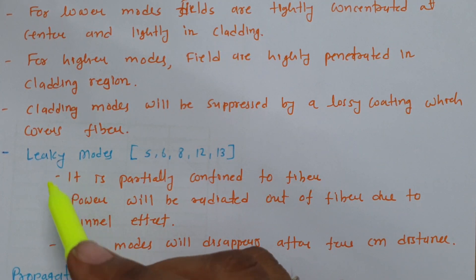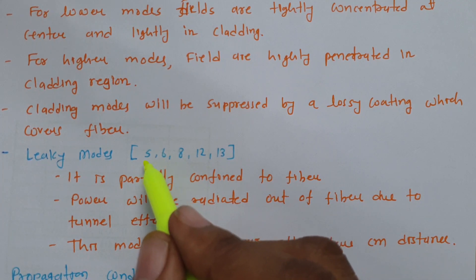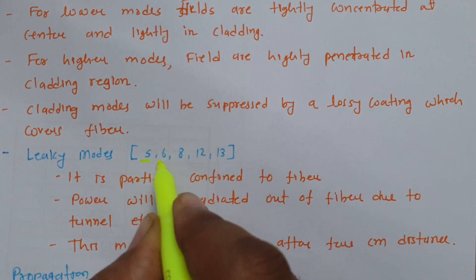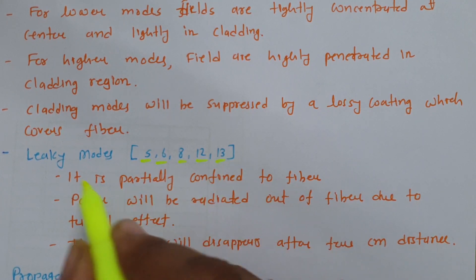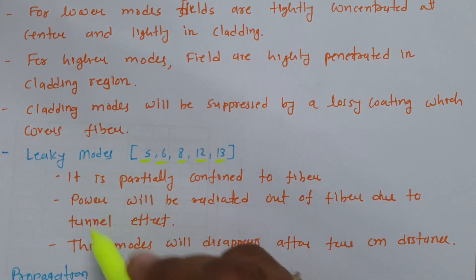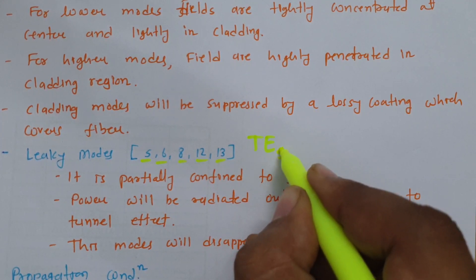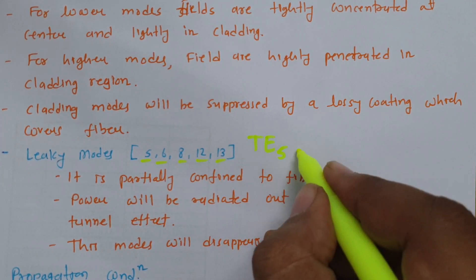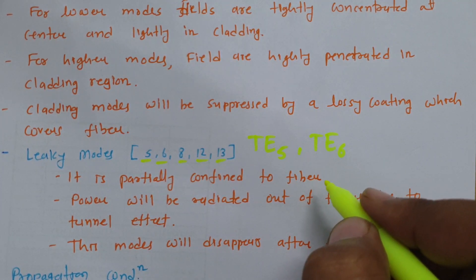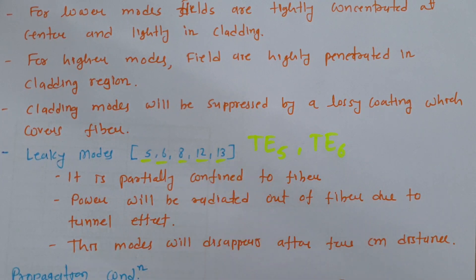Another category is leaky modes. For example, modes like TE5, TE6, TE8, TE12, and TE13 are leaky modes. In leaky modes, one can see the order is very high — 5, 6, 8, 12, 13 — so these are very high order modes.